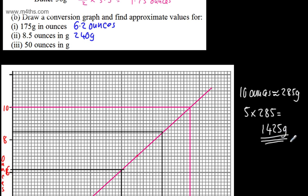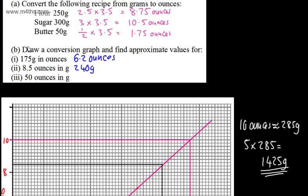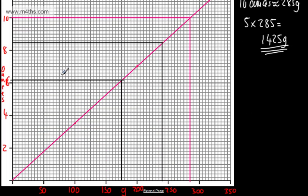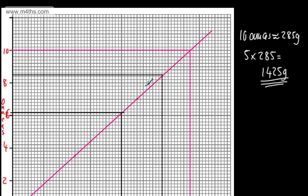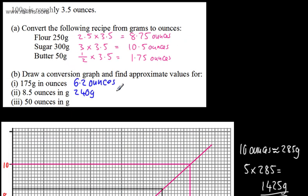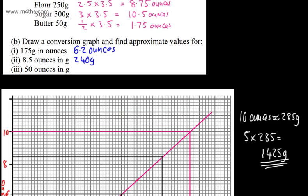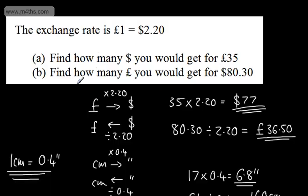So we've looked at direct conversions and conversion graphs. Make sure you're generally accurate with these and understand that to go from one unit to the other you multiply up, and to go backwards you divide by the same scale factor.